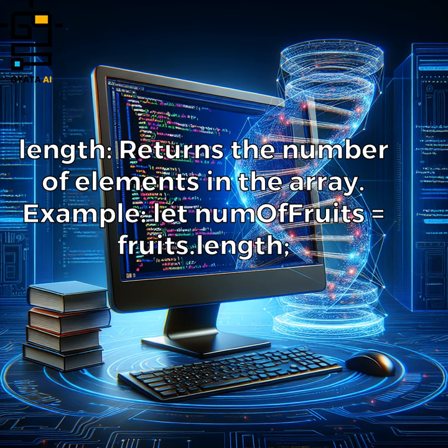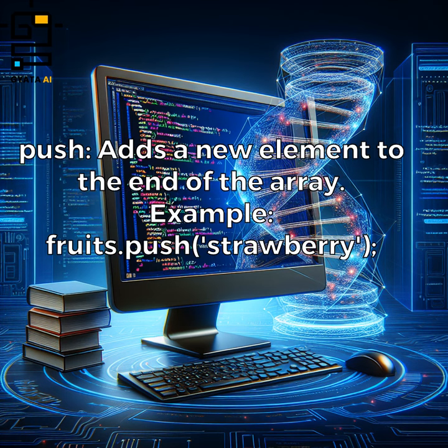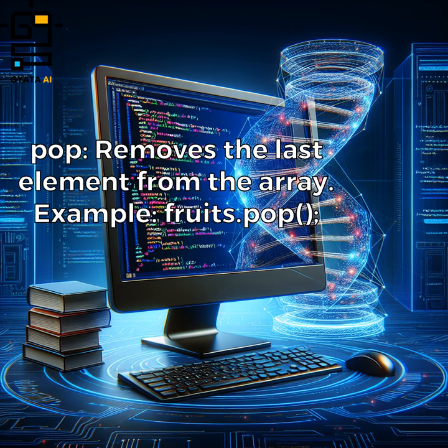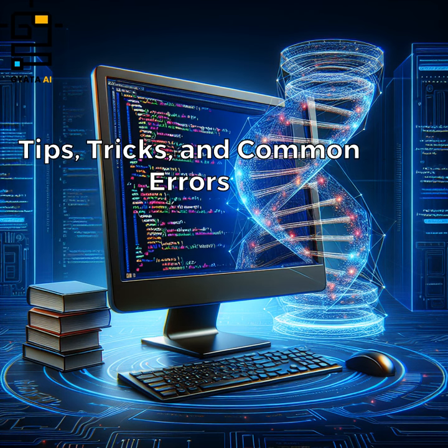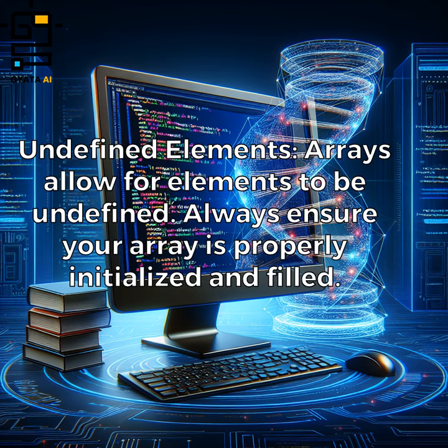Array properties and methods: length returns the number of elements in the array — example: let numOfFruits = fruits.length. Push adds a new element to the end of the array — example: fruits.push('strawberry'). Pop removes the last element from the array — example: fruits.pop().